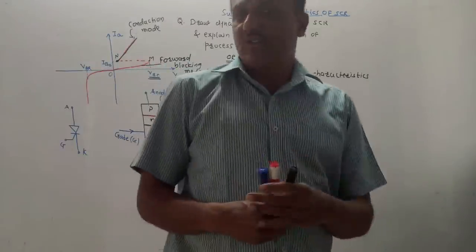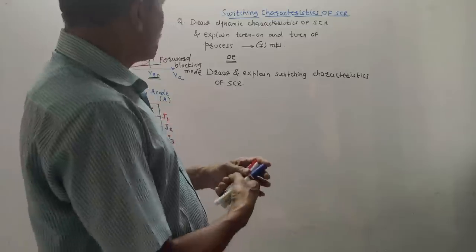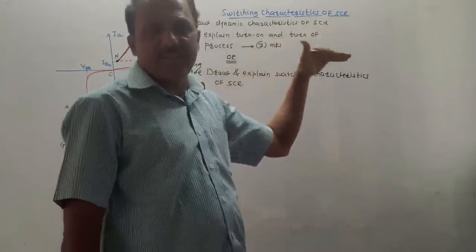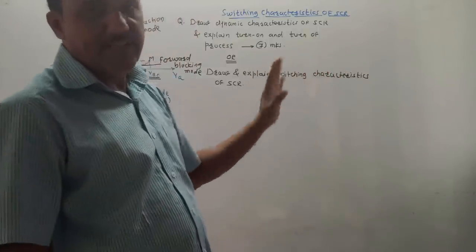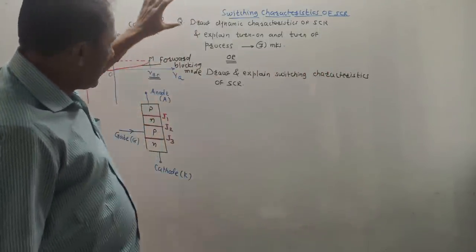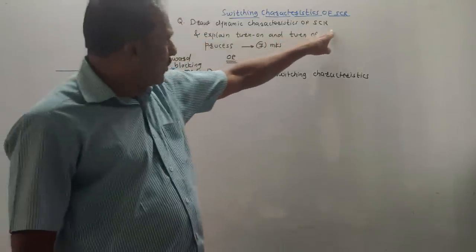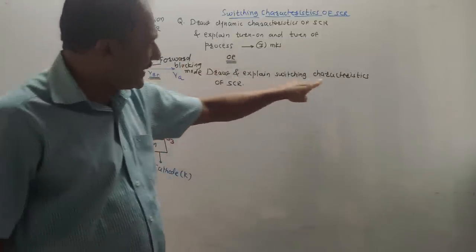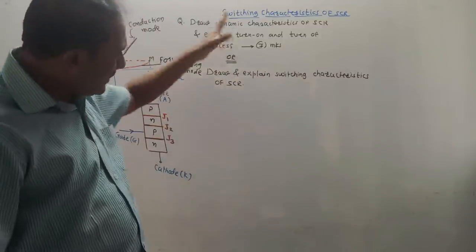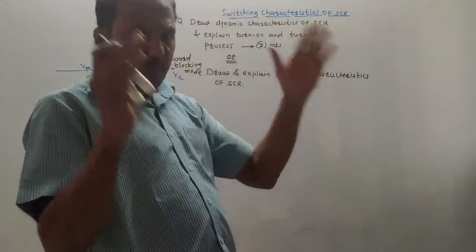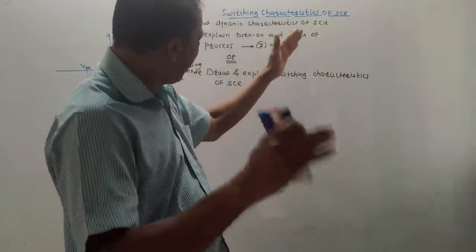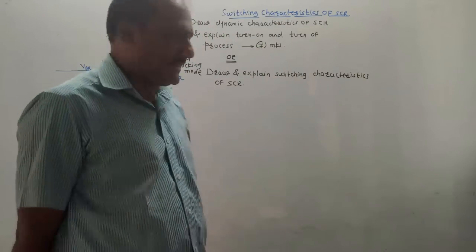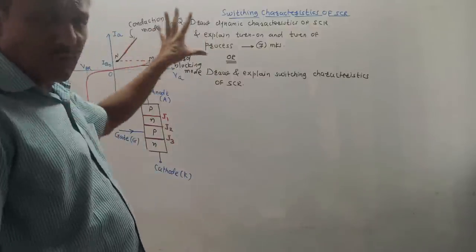Hello and welcome back. Today's topic is switching characteristics of SCR, from the subject Power Devices and Circuits (PDC) for third year ANTC students. The expected question is: draw the dynamic characteristics of SCR and explain the turn on and turn off process, or draw and explain switching characteristics of SCR. In both cases, we need to draw the proper graph of turn on and turn off process.